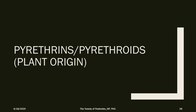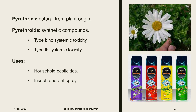Now moving to pyrethrins and pyrethroids, which are of plant origin. Pyrethrins are natural compounds extracted from the dried flowers of pyrethrum plants. Pyrethroids are the name given to synthetic derivatives resembling the natural pyrethrins. There are two classes of pyrethroids — type 1 and type 2 — depending on whether they exert systemic toxicity or not. They are commonly used as household pesticides and insect repellent sprays applied to the outer surface of clothes.